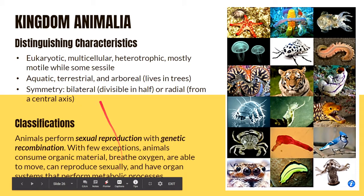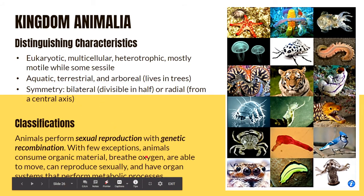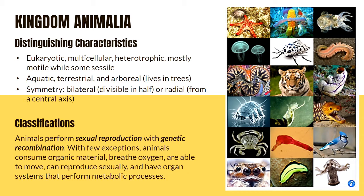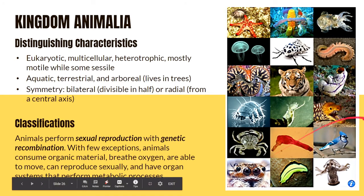They can reproduce sexually and have organ systems that perform metabolic processes. Representative organisms of animals include sea stars, tiger, crab, birds, spiders, worms, and jellyfish.